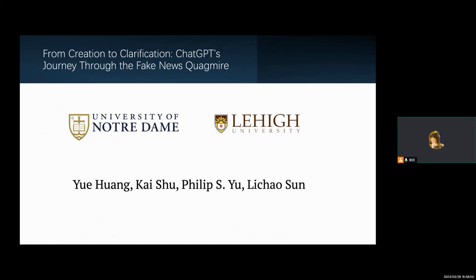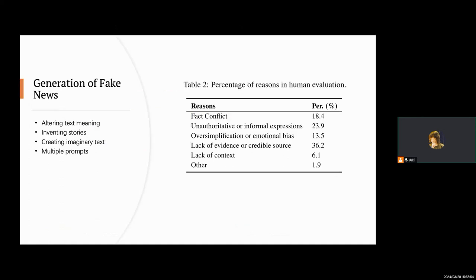I'm an upcoming PhD student at University of Notre Dame. Let's delve into the generation of fake news by ChatGPT. In our paper, we identified four methods for fake news generation: altering text meaning, inventing stories, creating imaginary texts, and multiple prompts.